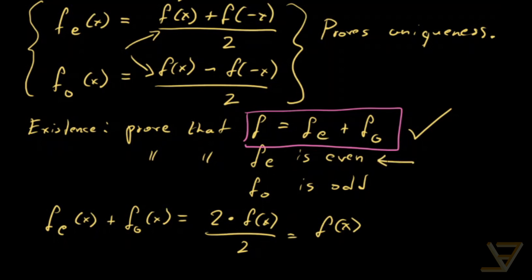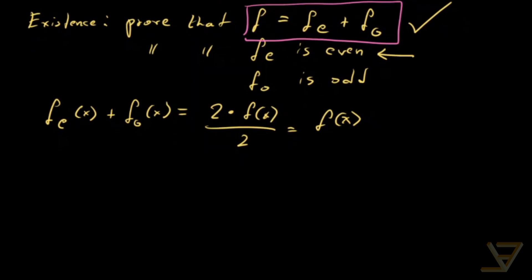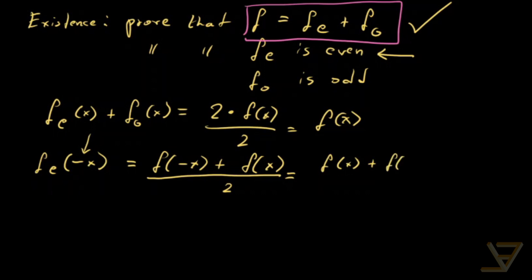Next we're going to prove that f_e is even. So remember f_e, we need to show that f_e of negative x is equal to f_e of x. So what we'll do is that we'll sub in negative x over here and that gives us f of negative x plus f of x because this double negative makes a positive. And now we can use commutativity to get f of x plus f of negative x over two and that's simply f_e of x so we do have that it's even.